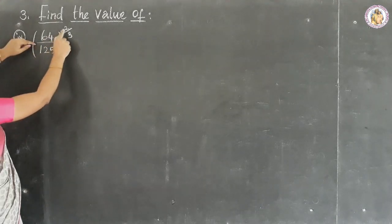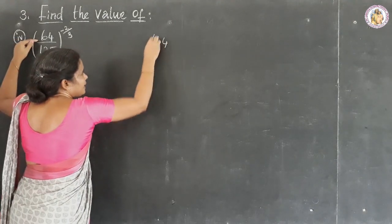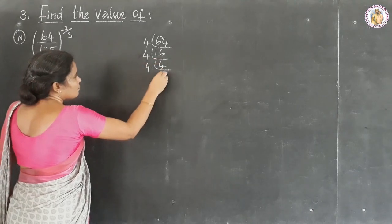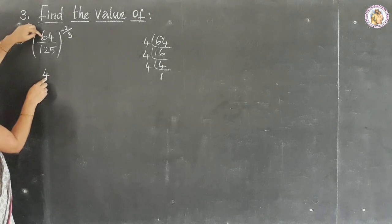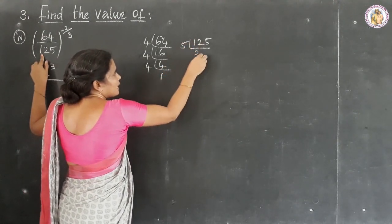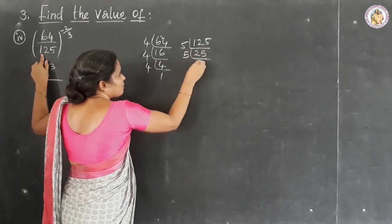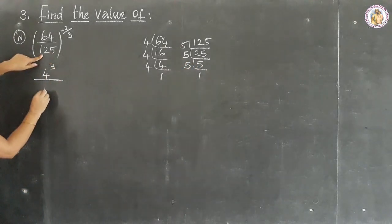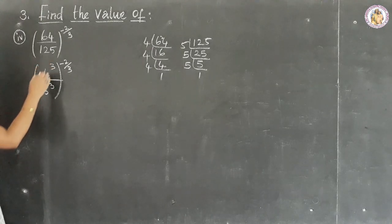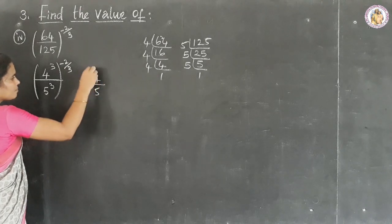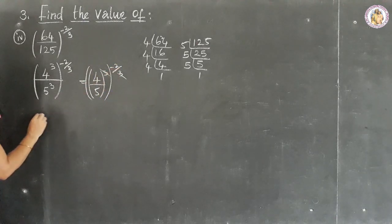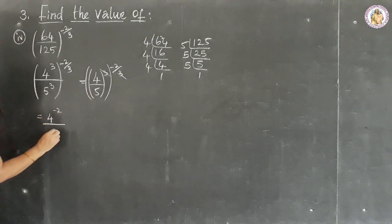Question number 4: (64 divided by 125) to the power of minus 2 by 3. Finding LCM for 64 — 64 equals 4 to the power of 3. And for 125 — last digit is 5, so 125 equals 5 to the power of 3. So we have (4 to the power of 3 divided by 5 to the power of 3) to the power of minus 2 by 3, which equals (4 by 5) to the power of minus 2 by 3. The 3s cancel, giving 4 to the power of minus 2 divided by 5 to the power of minus 2.